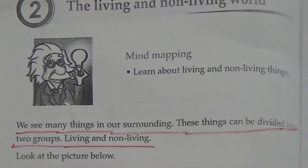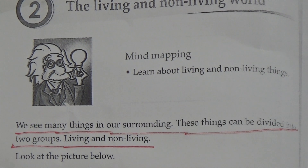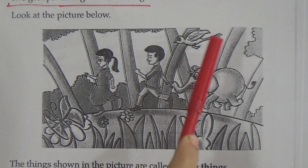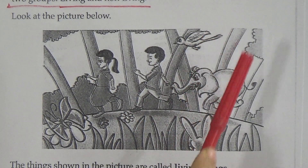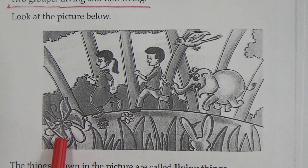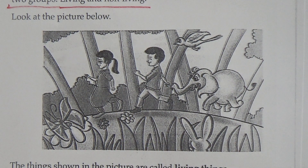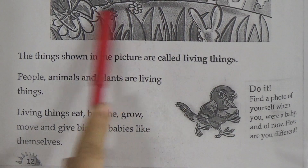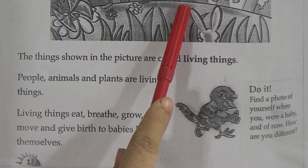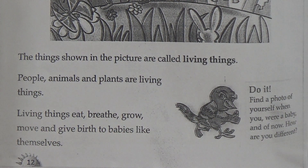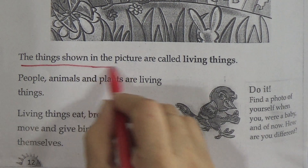Look at the picture below. You can see there is a girl, a boy, a bird, an elephant, a butterfly, flowers, trees, and so on. The things shown in the picture are called living things. So all these things are living things. What is called living things?